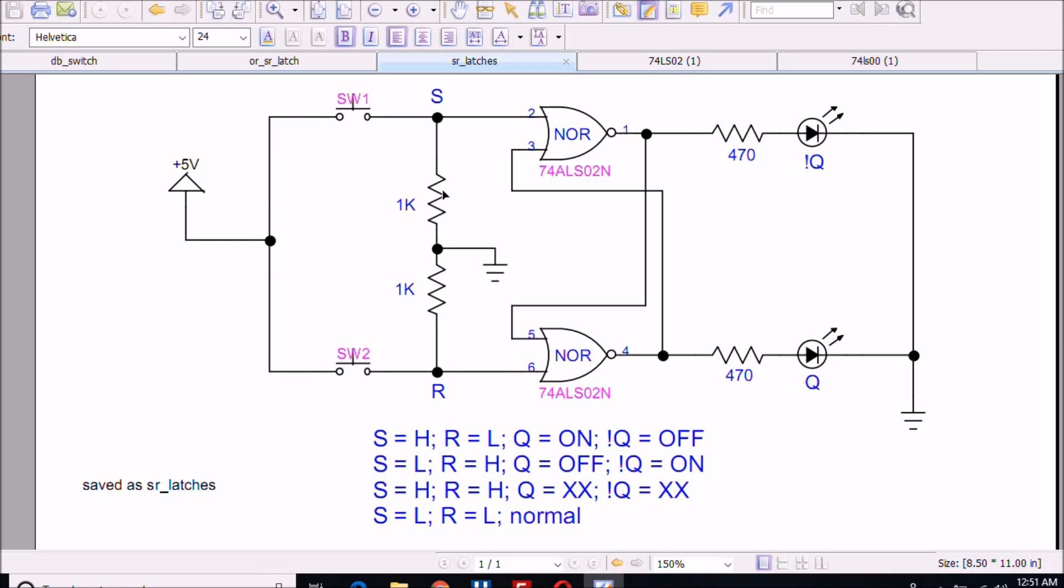And again, of course, the same thing works. If S is high and R is low, Q is on, not Q is off. If S is low and R is high, Q is off, not Q is on. If S is high and R is high, illegal. And they normally, when you're not pressing the switches, both will stay low.